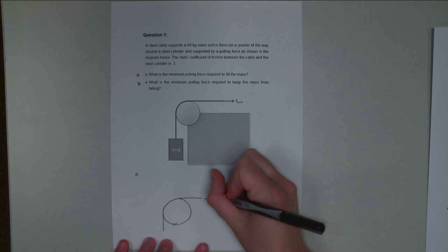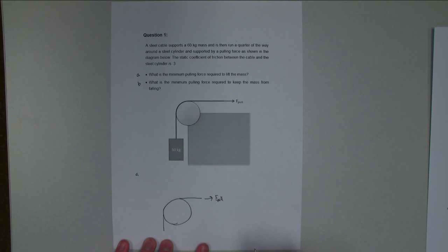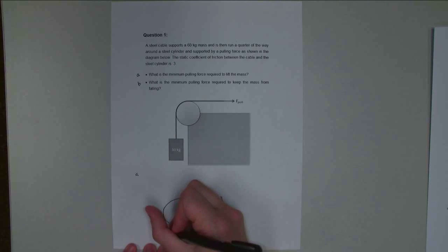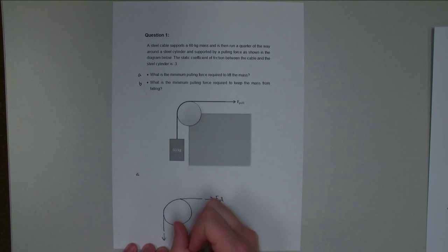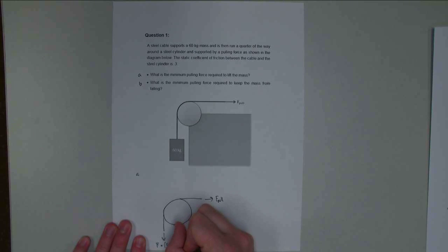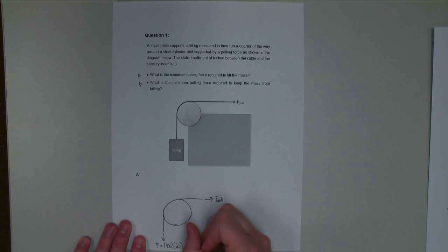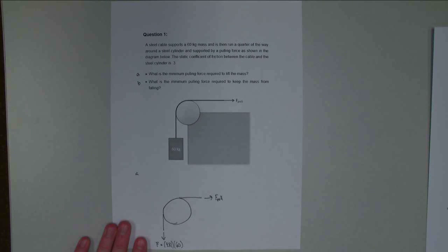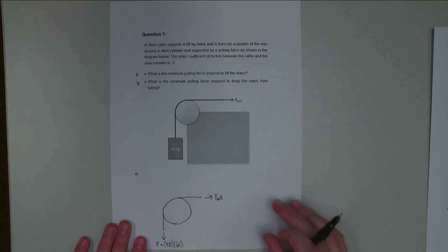This one up here is F pull, which we don't know, we're trying to figure that out. And this one down here is going to be simply the weight, and the force is going to be equal to 9.81 times 60 kilograms. And that will be just the weight force.